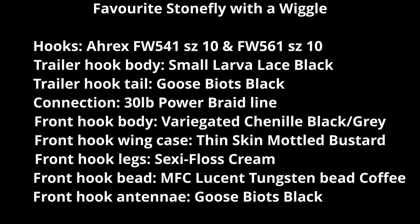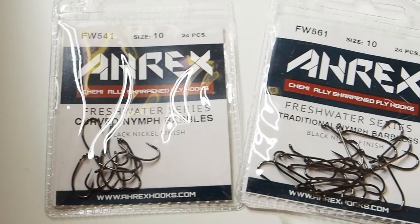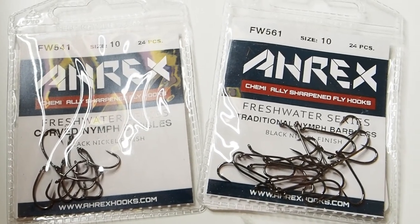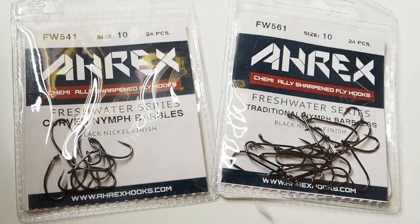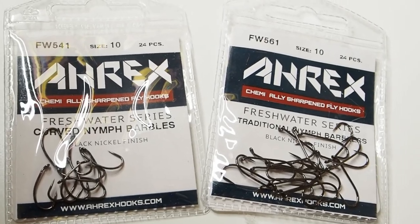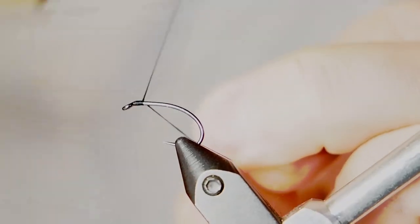Hey, it's Chris here from Bow River Trout Fitters. Today we're going to tie my version of my Stonefly Nymph, but as a wiggle pattern. This is a two hook nymph. We're going to use a size 10 curved nymph barbless and a traditional nymph barbless hook, both size 10, both from RX, one of my favorite hook styles.